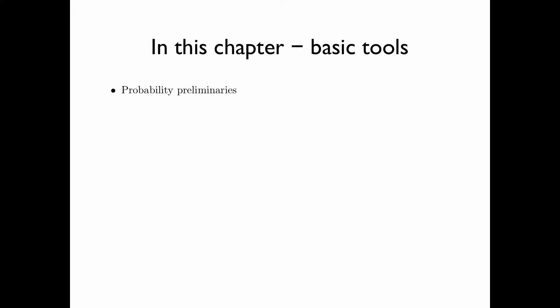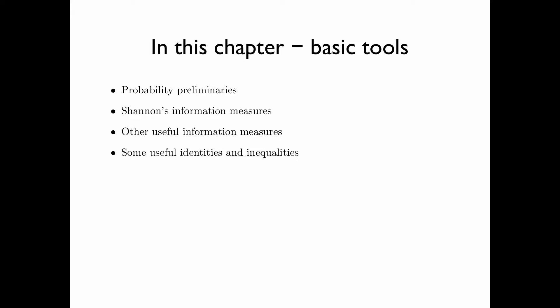First, we will talk about some basic concepts in probability. We will then introduce Shannon's information measures and prove some of their properties. Then we will talk about some other useful information measures, and some useful identities and inequalities in information theory.